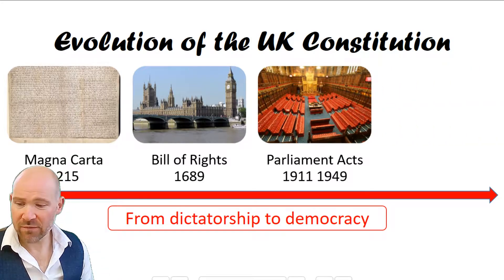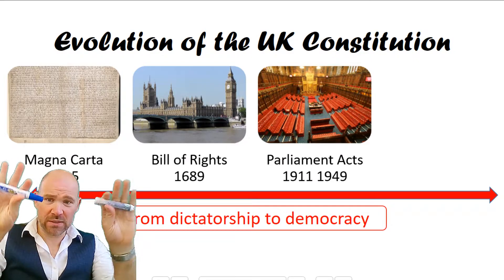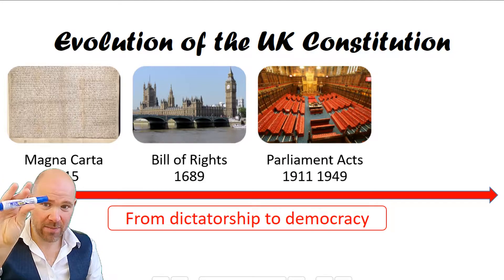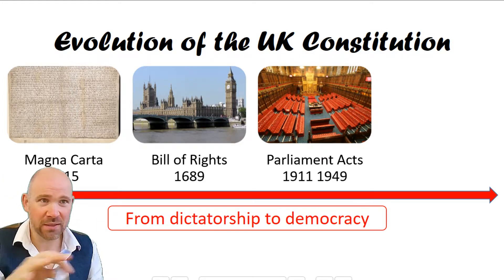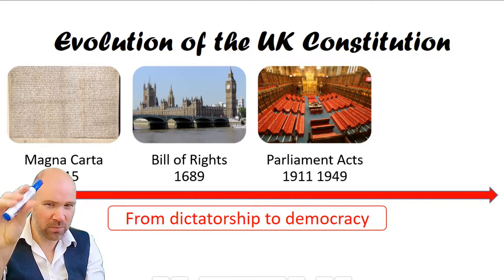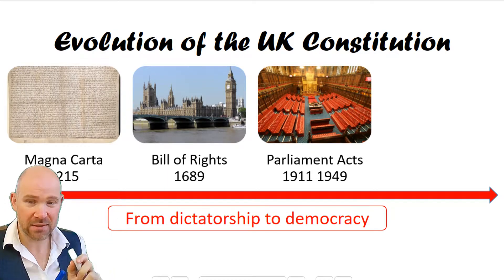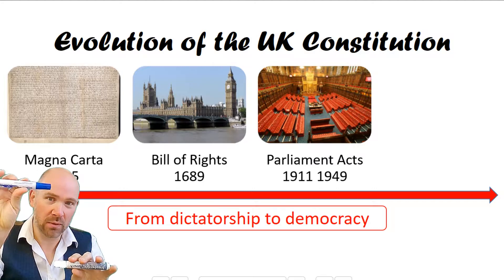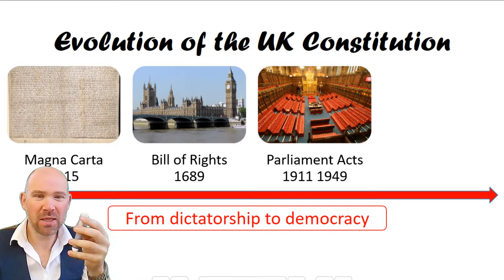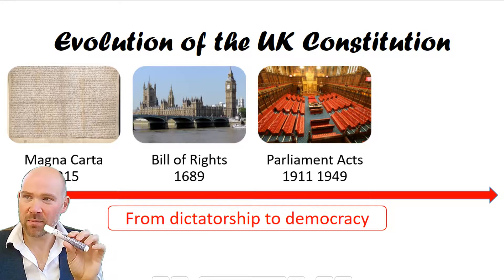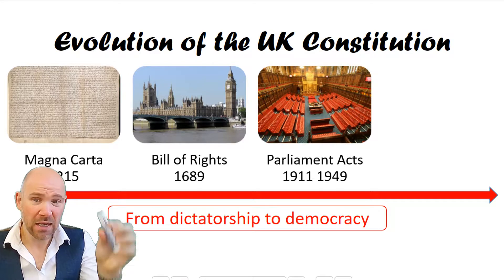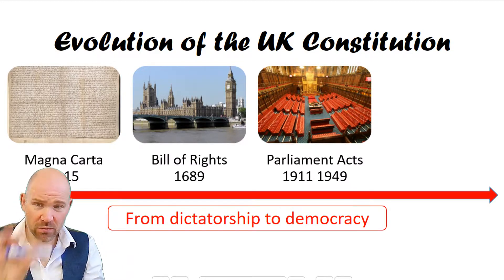The Parliament Acts of 1911 and 1949: before that, you had two equal houses — the House of Commons and the House of Lords — and any law had to go through both. One is democratically elected, the House of Commons; the other, the House of Lords, is appointed or hereditary. What the Parliament Acts did was take the power of the House of Lords way down and the power of the House of Commons way up, reducing the Lords from an equal bicameral chamber to a revising chamber that can only delay legislation — initially for two years, then eventually one year.